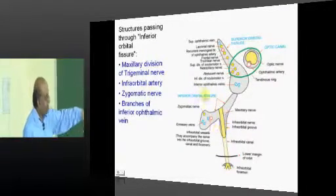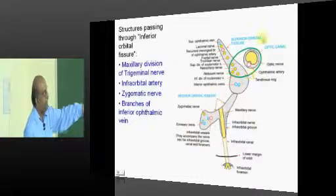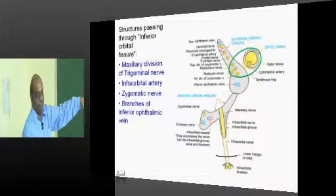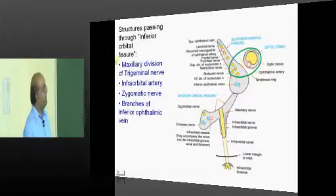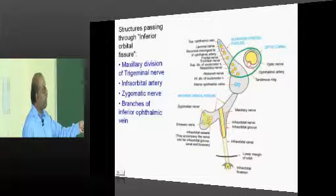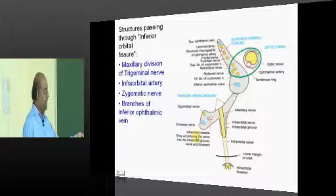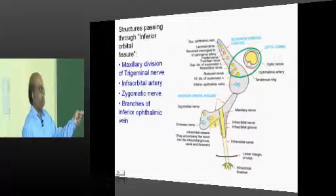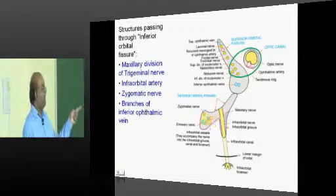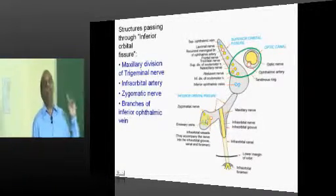What are the contents of inferior orbital fissure? Here you have a superior orbital fissure. Maxillary division of the fifth cranial nerve, infraorbital artery, zygomatic nerve and branches of the inferior ophthalmic vein all pass through inferior orbital fissure.